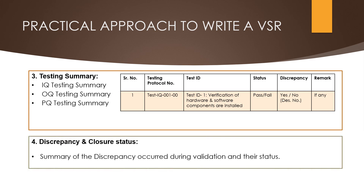The fourth component of the validation summary report is the discrepancy and closure status. In this section we need to define all discrepancy details observed from start to end of the validation activities. For example: test ID details, test step details, discrepancy number, discrepancy details, resolution of that discrepancy, and the closure status. We can make a table and provide the relevant details, including discrepancy and closure status.